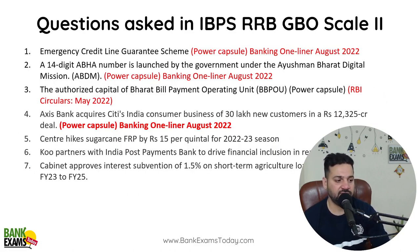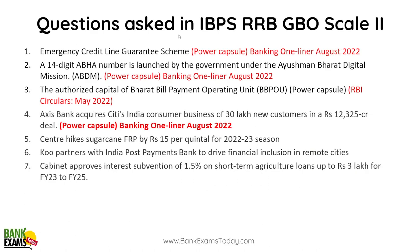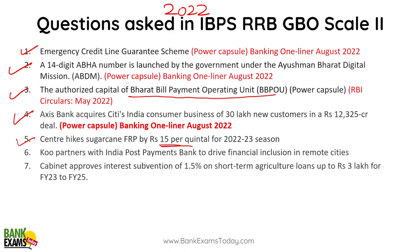Let's look at the questions asked in the previous paper so you can understand what kind of questions were asked in GBO 2022. Emergency Credit Line Guarantee Scheme — that was from Power Capsule, from August 2022 current affairs. There is a trend in GBO — questions are asked from the latest financial awareness and current affairs related to banking. RBI circular on Bharat Bill Payment Operating Unit — there was a question from that. Acquisition of Citibank's India consumer base by Axis Bank — that was very popular news from August 2022. Centre hikes sugarcane FRP by 15 rupees per quintal — that was a current affair. COOP partners with India Post Payment Bank — very important, related to the financial industry.